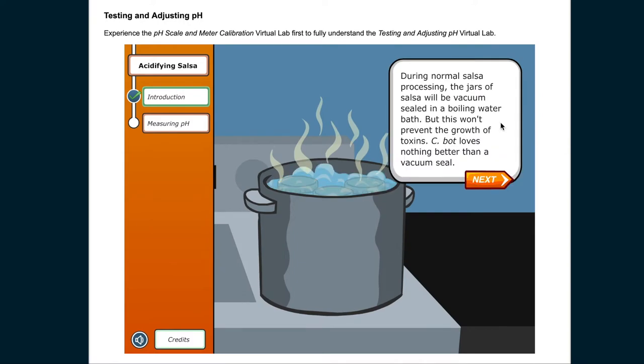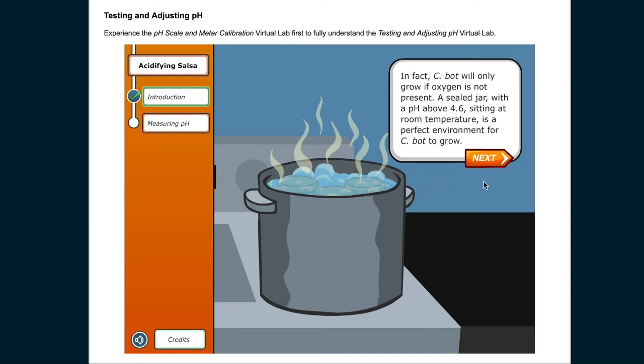During normal salsa processing, the jars of salsa will be vacuum sealed in a boiling water bath, but this won't prevent the growth of toxins. CBOT loves nothing better than a vacuum seal. In fact, CBOT will only grow if oxygen is not present. A sealed jar with a pH above 4.6 sitting at room temperature is a perfect environment for CBOT to grow.